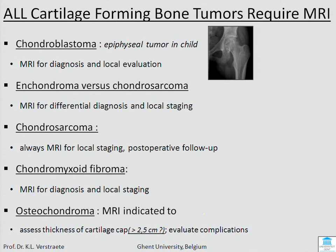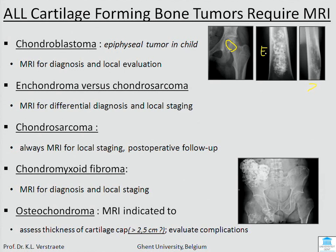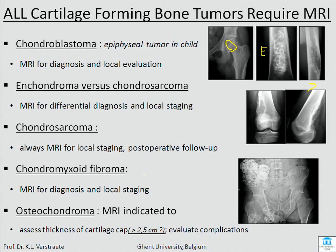These were all cartilage forming tumors. If you have a lytic lesion in an epiphysis in a child, then it is a chondroblastoma — you need MRI for this tumor. Then we had enchondroma, and for enchondroma you need MRI for differential diagnosis with chondrosarcoma. Then there was a difficult one — chondromyxoid fibroma — it looks like a non-ossifying fibroma but it breaks through the cortex, so be careful. Chondrosarcoma needs MRI, and osteochondroma needs MRI to see the thickness of the cartilaginous cap — if it is more than 2.5 centimeters thick, it's probably a chondrosarcoma.